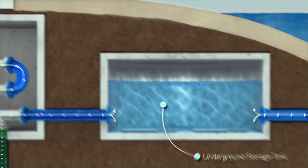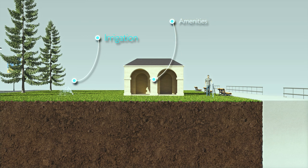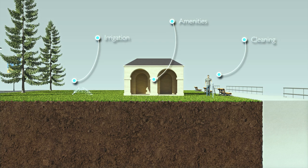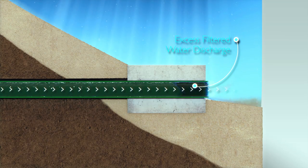From here, the safe recycled water is used to service amenities, irrigation and cleaning. Any excess filtered stormwater is discharged at South Bondi.